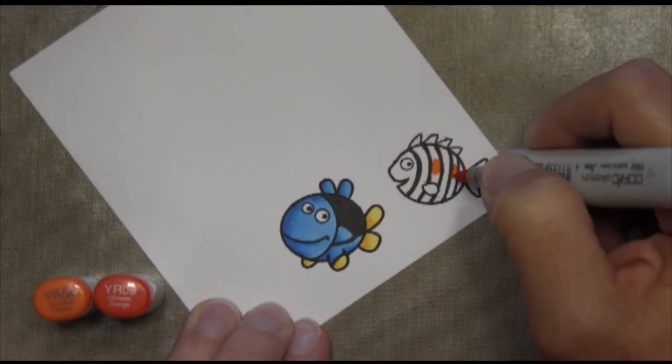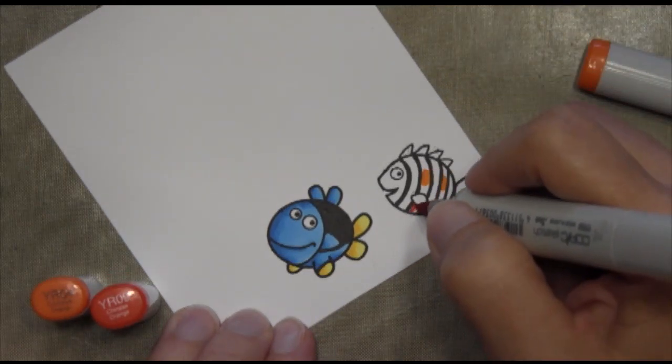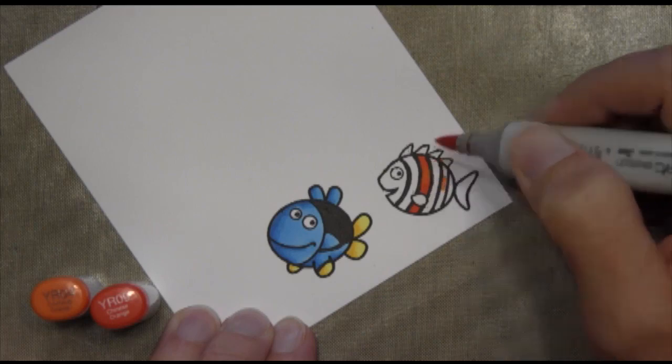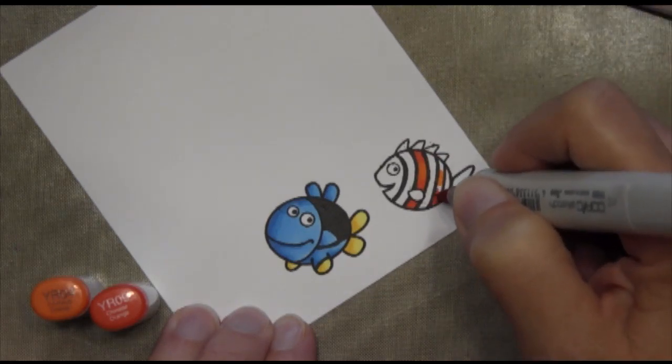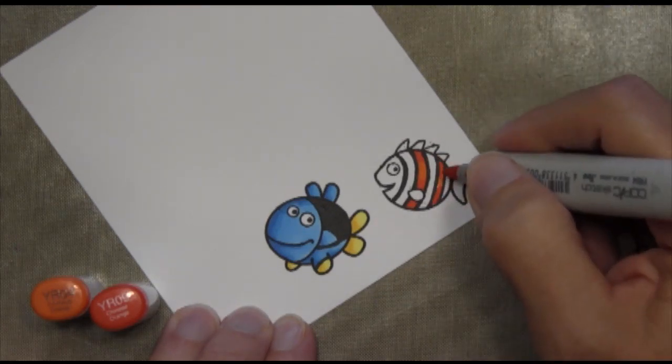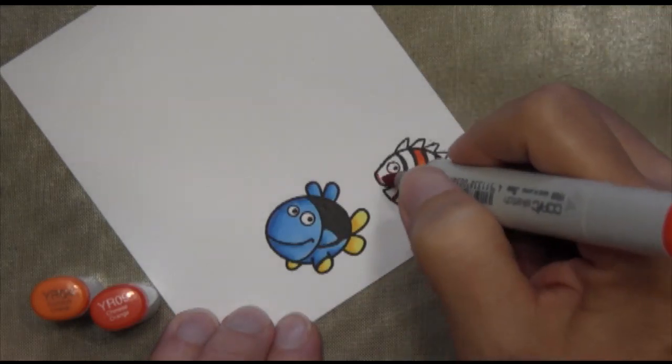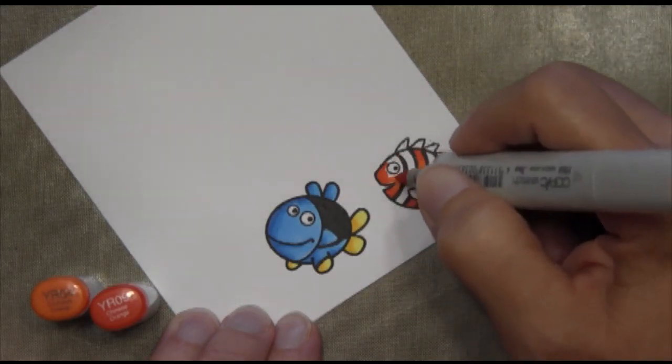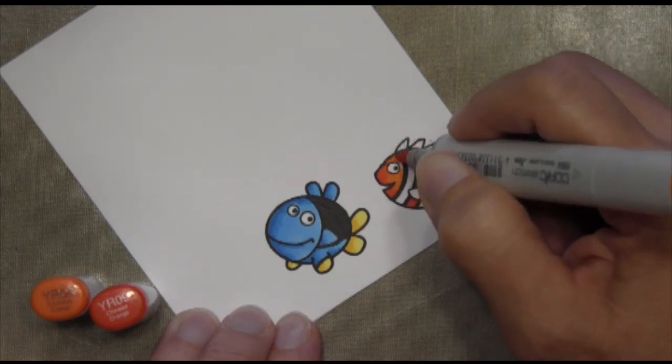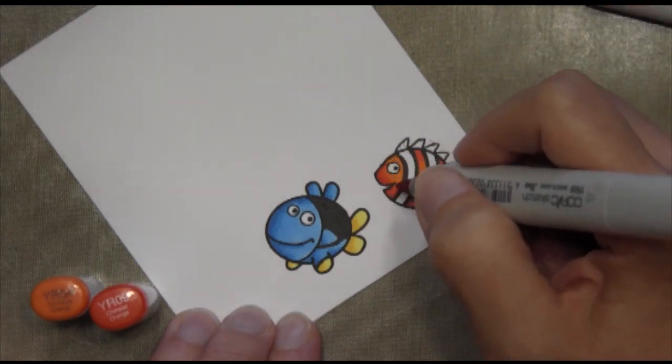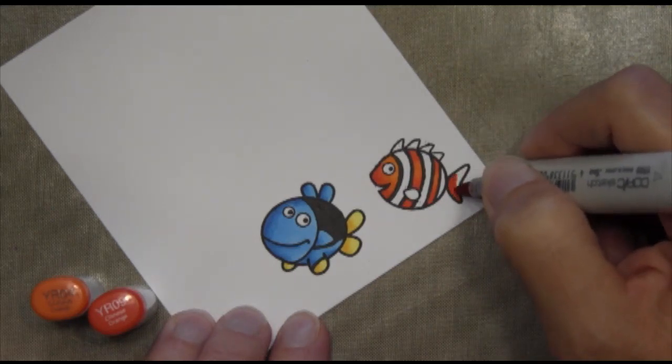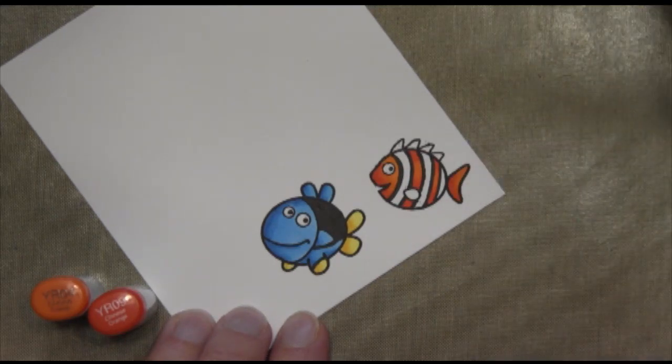Now for Marlin, I'm going to color the light reflections YR04. It's hard to see that light coming off my pen caps there, but it's YR04 and YR09. So I get a little bit of dimension there on him. And the tips are pretty fine on these markers. So it's pretty easy to stay in the lines and around these dies. I'm going to color his fins there.